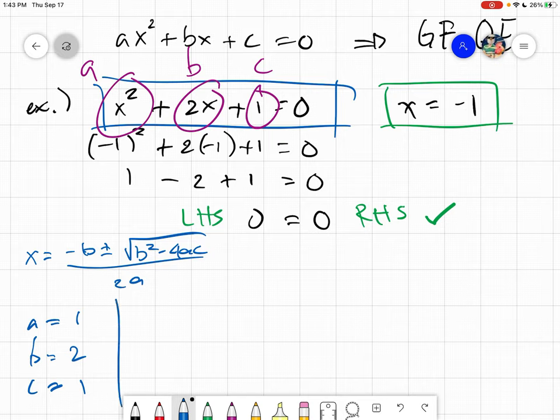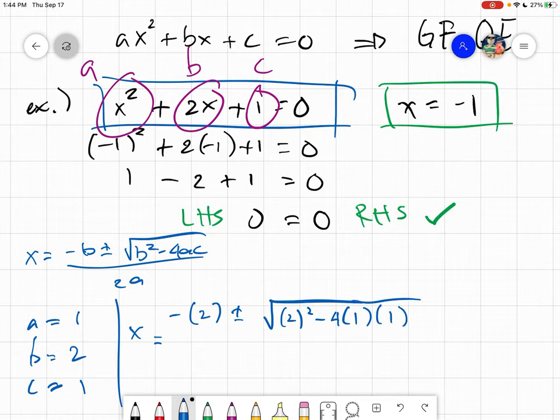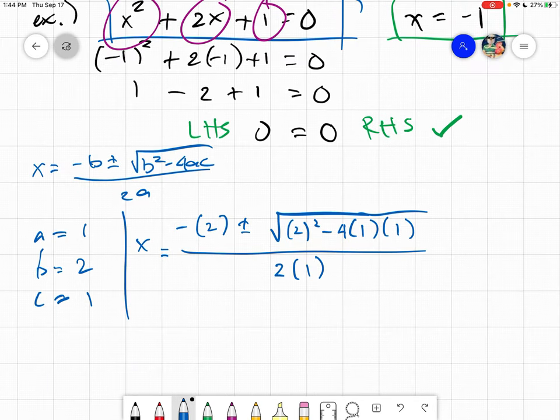By substitution, our b is 2, so we always substitute and place parentheses so we don't get confused with the sign. This is negative 2, plus minus the square root of b squared, which is 2 squared, minus 4 times a which is 1, times c which is 1, divided by 2a which is 2 times 1.